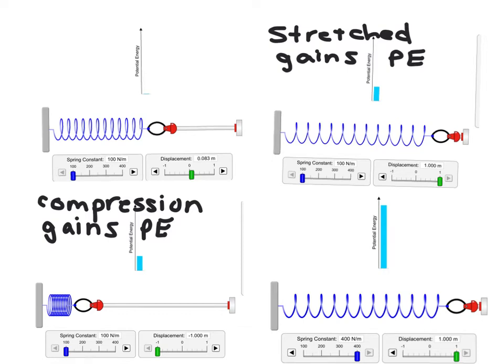Now there is one other factor—kind of how in gravitational potential energy, we have both mass and height as a factor. We also have here the spring constant. And as we notice, as we make the spring constant thicker, the amount of elastic potential energy also increases.